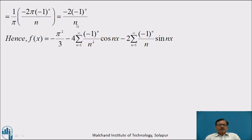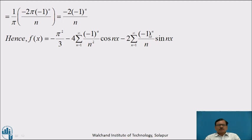Substituting all the values of a naught, aₙ and bₙ in equation number 1, we get f(x) equals minus pi square by 3, minus 4 times summation of n equal to 1 to infinity of (−1)ⁿ by n square times cos(nx), minus 2 times summation of n equal to 1 to infinity of (−1)ⁿ by n times sin(nx).